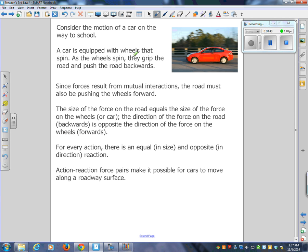Last one. You're driving your car or truck on the way to school. A car is equipped with wheels that spin. As the wheels spin, they grip the road and push the road backwards. How come the road doesn't go backwards? It's attached to the earth. The earth is really big. If a small person goes over and pushes Lucas, Lucas doesn't go anywhere. He's big compared to a small kid. Just like the car on the road. Since forces result from mutual interactions, the road must also be pushing the wheels forward. And since the car is attached to the wheels, the car goes forward. For every action, there's an equal in size and opposite reaction.